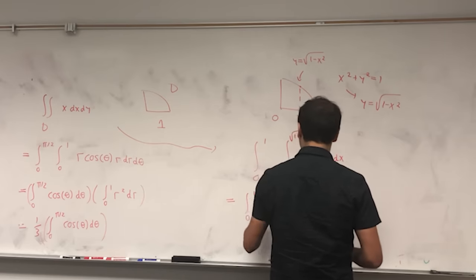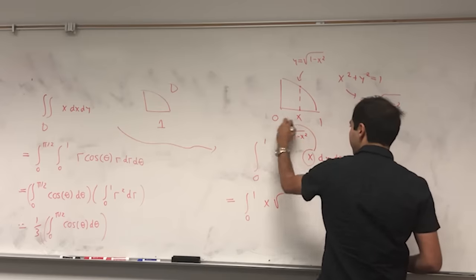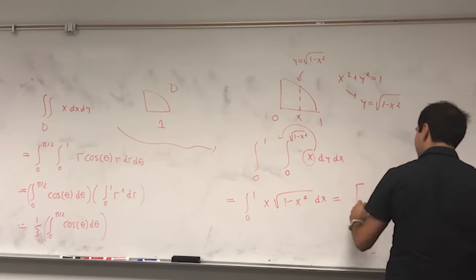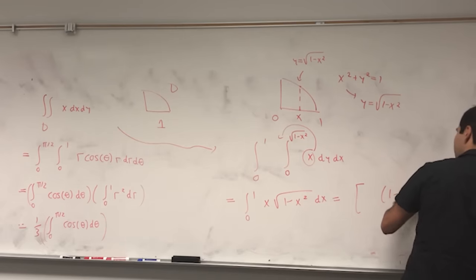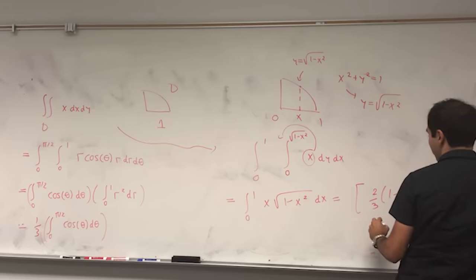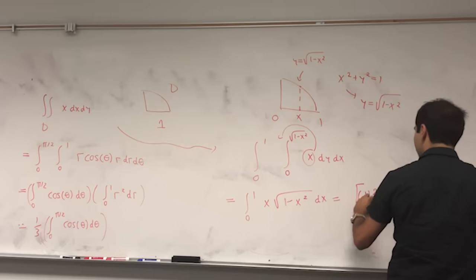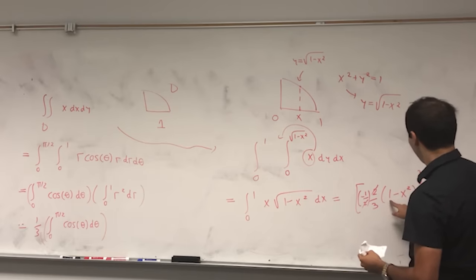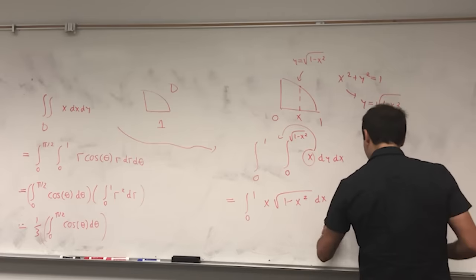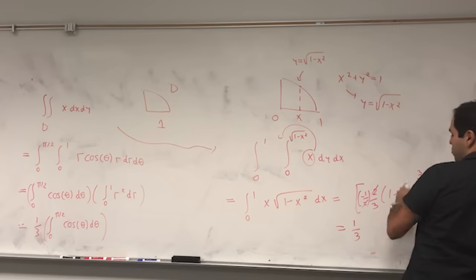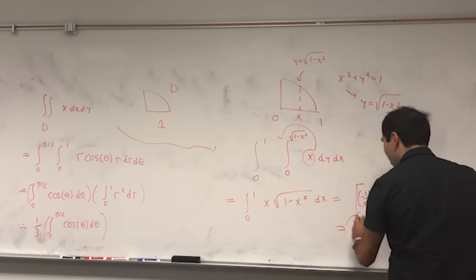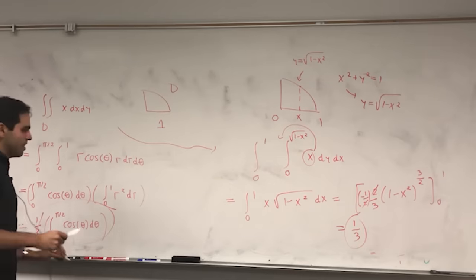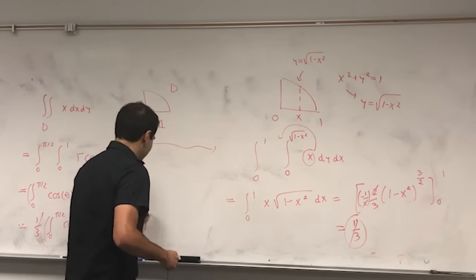On the other hand, using direct double integration: on the quarter circle y = sqrt(1-x²), x goes from 0 to 1. So the same integral is ∫₀^1 ∫₀^{sqrt(1-x²)} x dy dx = ∫₀^1 x·sqrt(1-x²) dx. Evaluating this antiderivative gives [-(2/3)(1-x²)^{3/2}] from 0 to 1 = 0 + 1/3 = 1/3. So 1/3 = (1/3)·∫cos(theta) d(theta), the 1/3's cancel, and the integral equals 1.